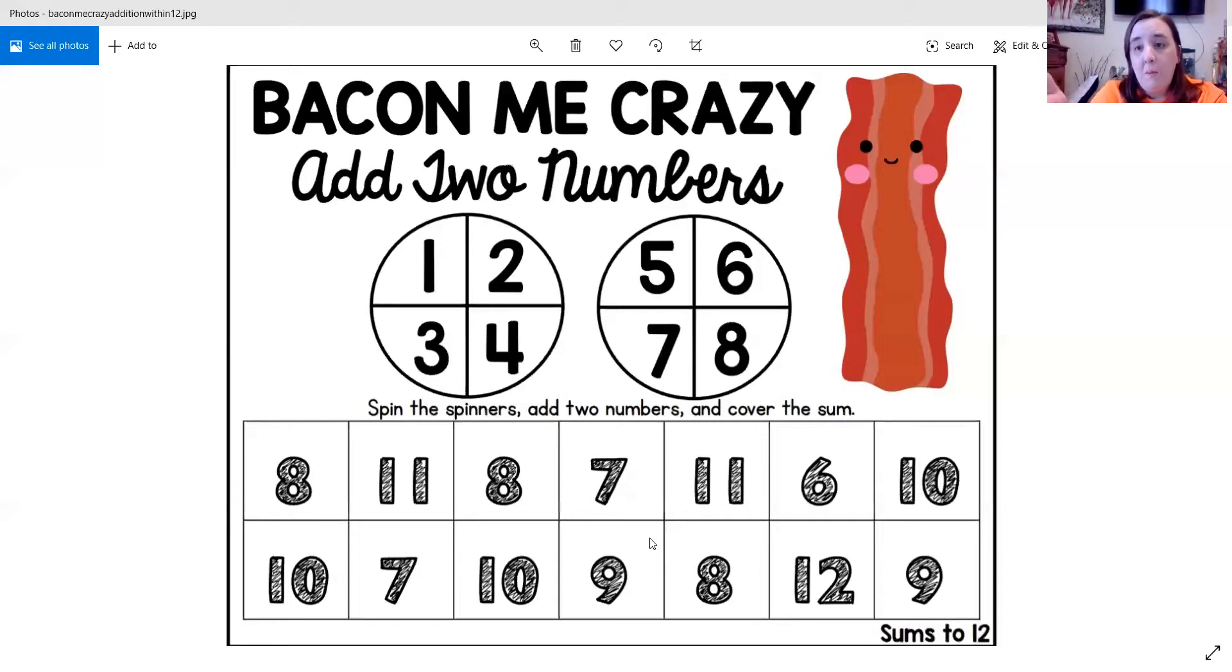Now if I'm playing with my partner, I'm not going to take a turn now because I already had a turn. I got my first sum. I would give the turn to my partner and they would have a turn to spin both spinners, add and find their sum.